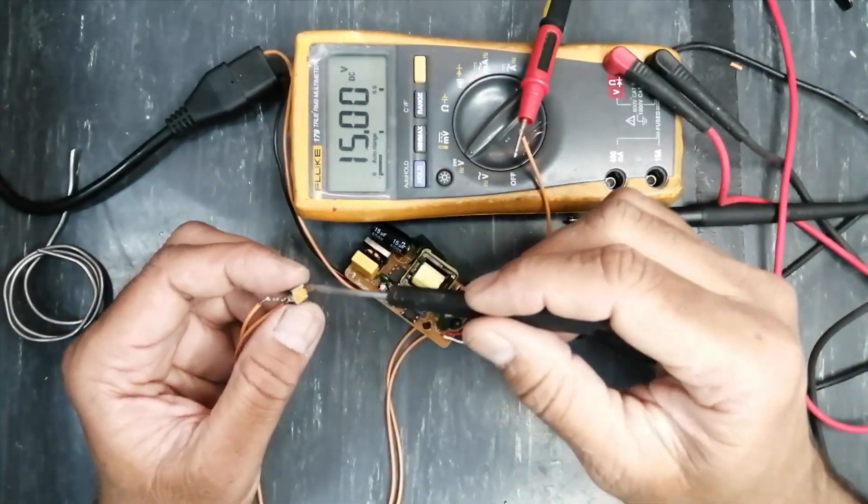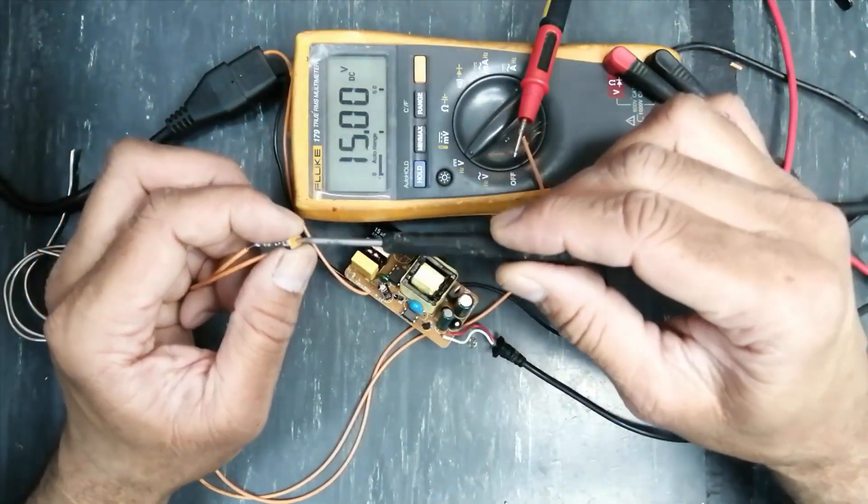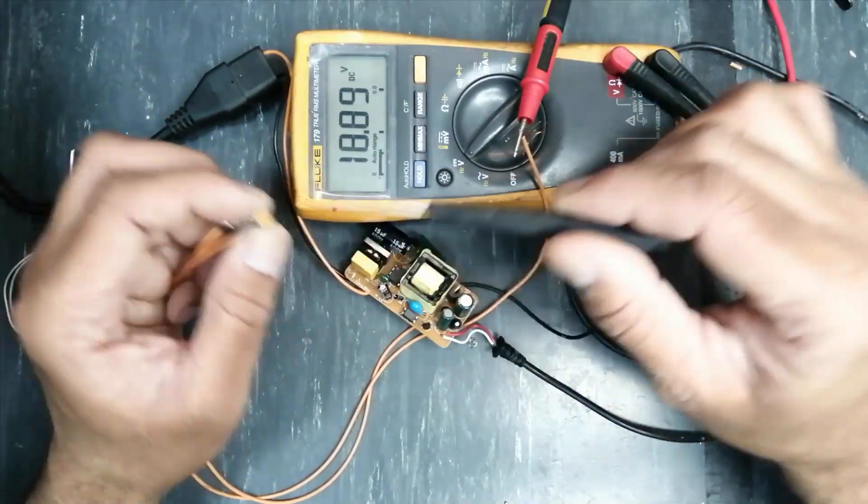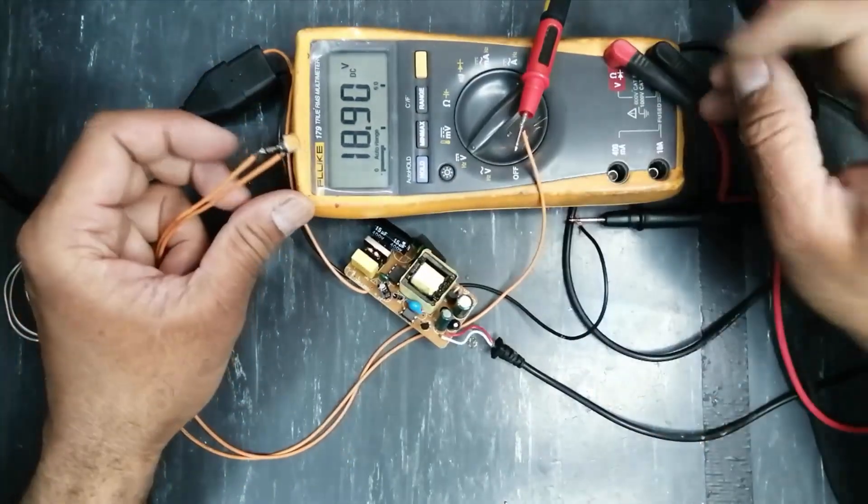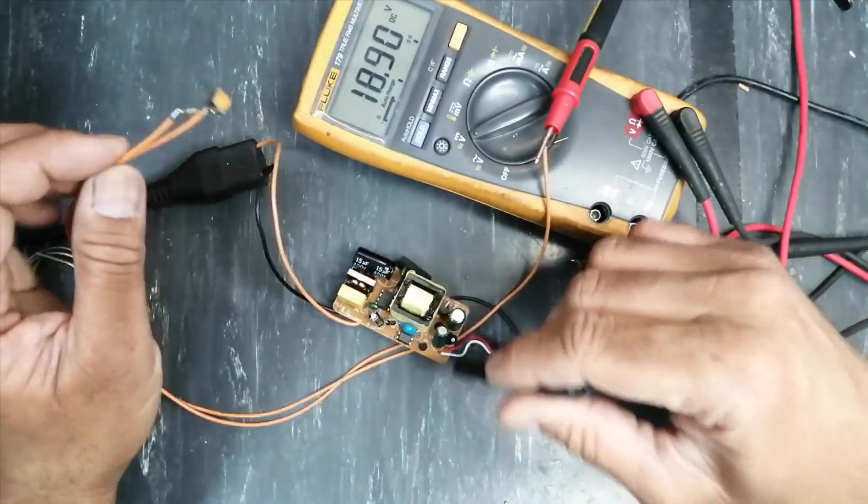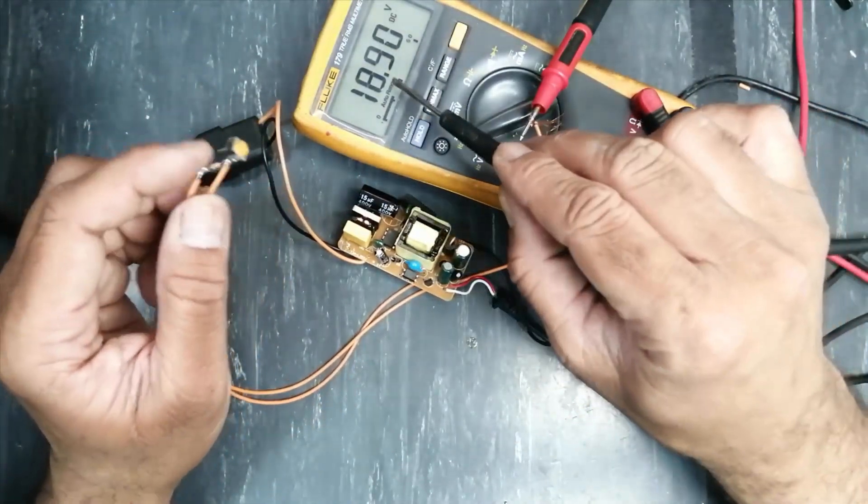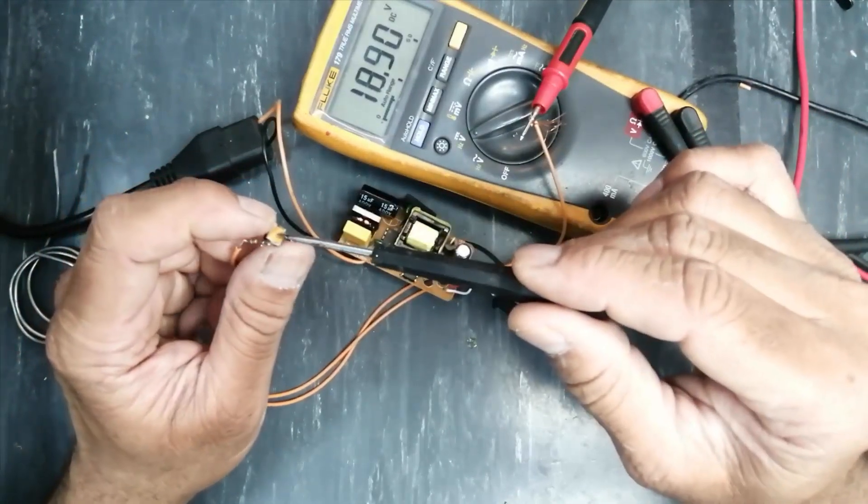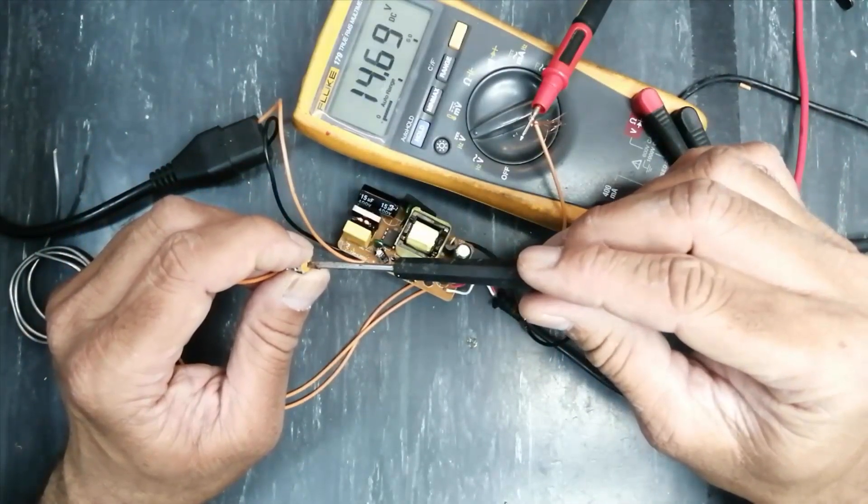So we can adjust it to maximum 18 volts. Now this SMPS is giving 18 volts. Its supply output was 12 volts, but I am taking now 18 volts. I don't need 18 volts because I have to connect it to the battery charger.